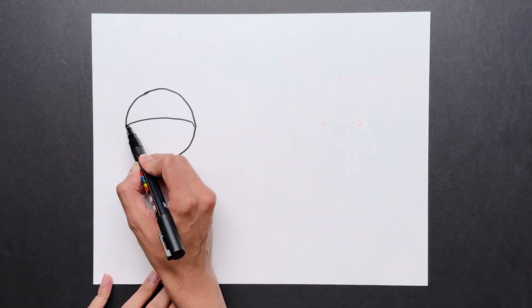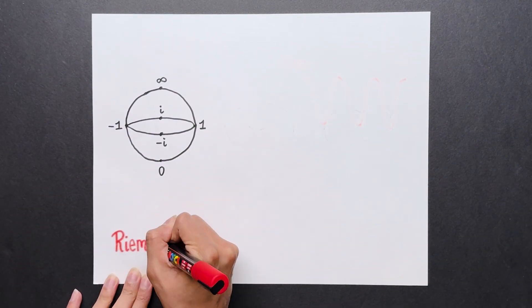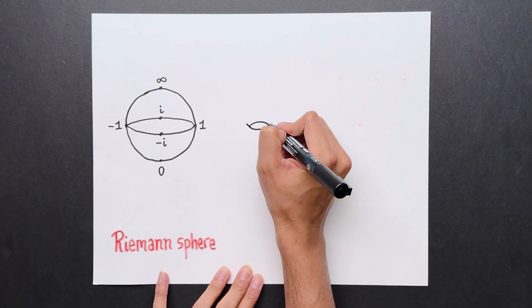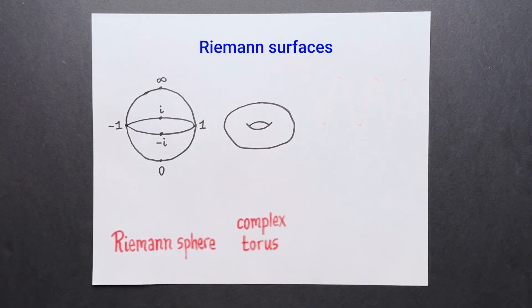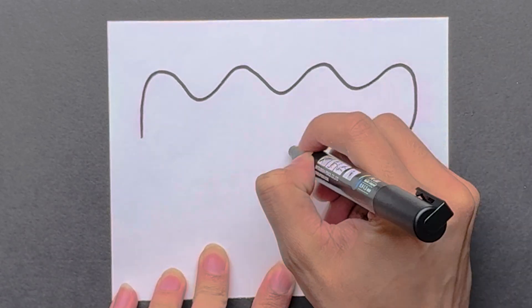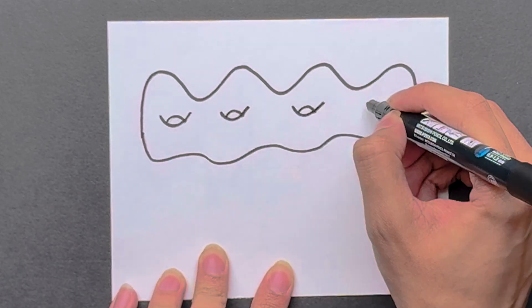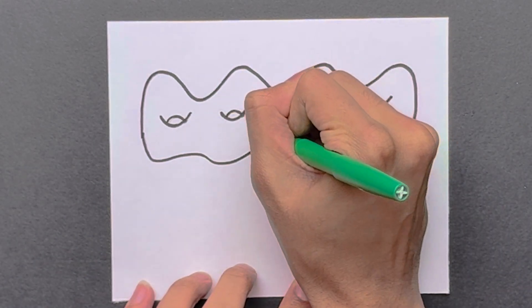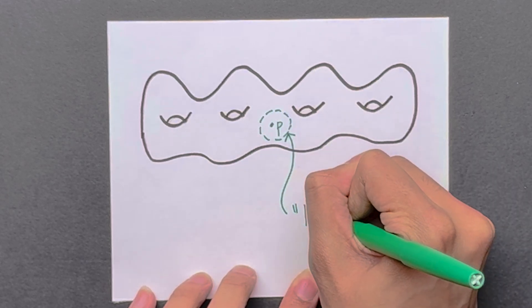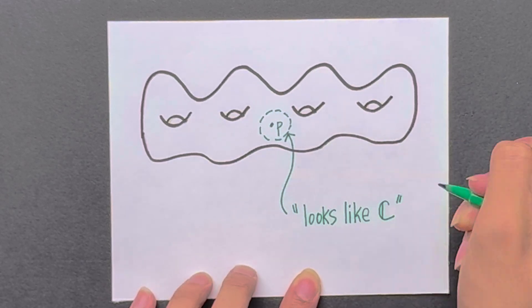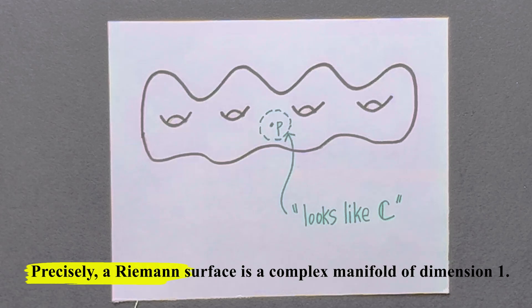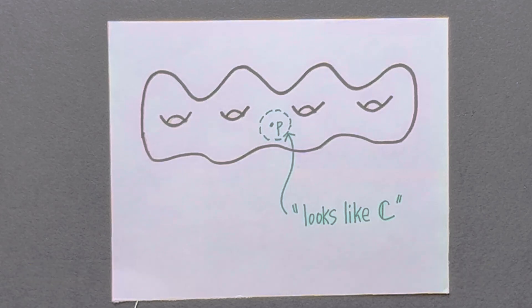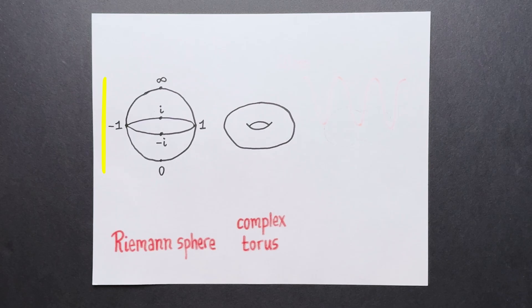So far, we've seen two examples of spaces that have strong algebraic properties, the Riemann sphere and the complex torus. These are examples of spaces called Riemann surfaces. A Riemann surface, roughly speaking, is any surface with the following property. If you pick any point on the surface, there's a neighborhood of that point, which in some sense looks like the complex plane. For those of you who'd like a precise definition, I'm putting one at the bottom of the screen. But for the video, this intuitive description will suffice. What we saw is that these two Riemann surfaces have a strong connection to algebraic geometry.